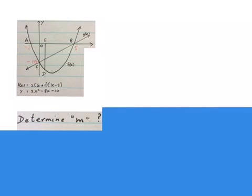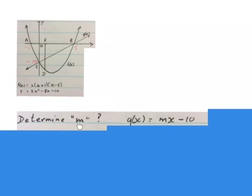The next question asks to determine the value of small letter m and that m was part of the g of x equation. There's two ways to do it. I'm going to go for the shorter one.